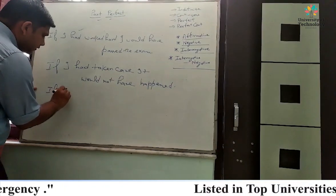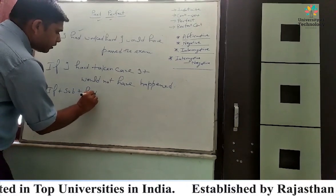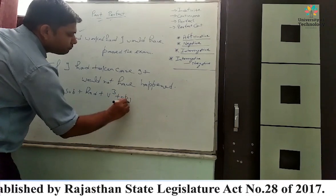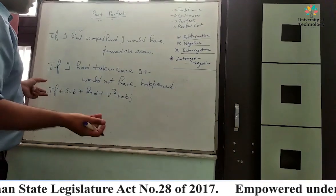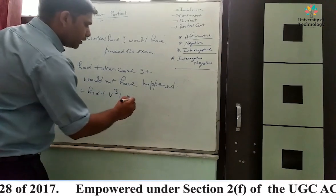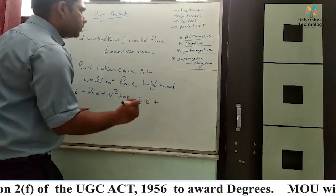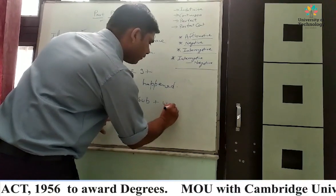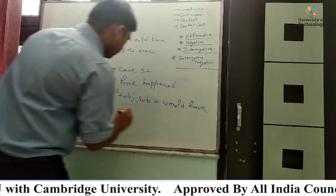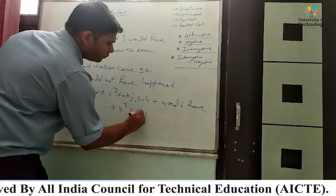The conditional syntax: if plus subject plus had plus verb third form plus object (object may or may not be present), then subject plus would have plus verb third form plus object. For example: If I had worked hard — no object here — I would have passed the exam, where 'passed' is verb third form and 'the exam' is the object.